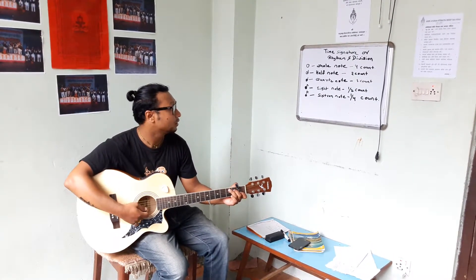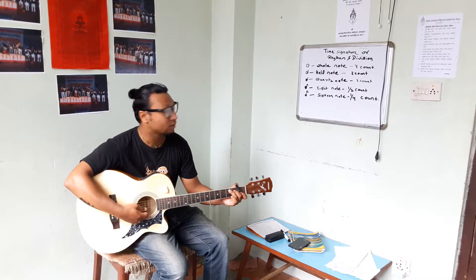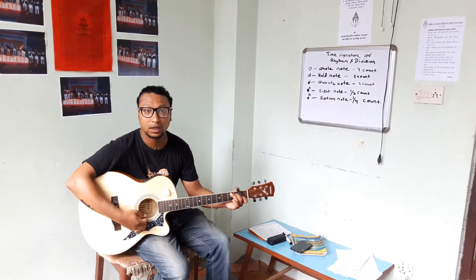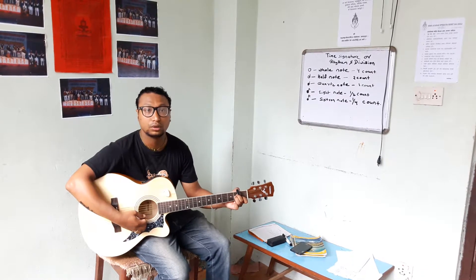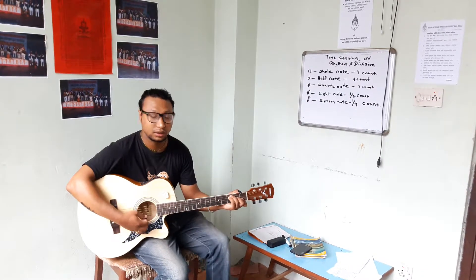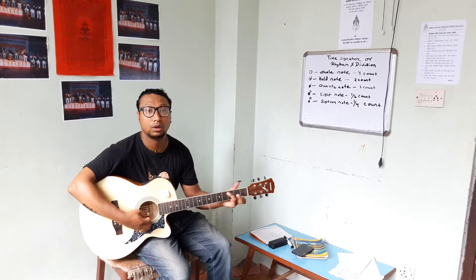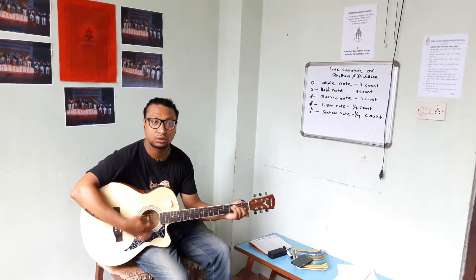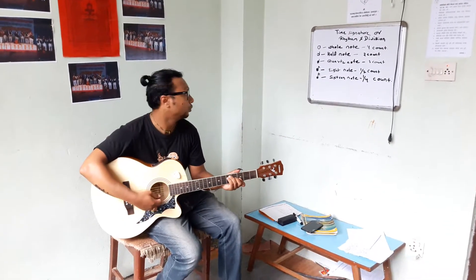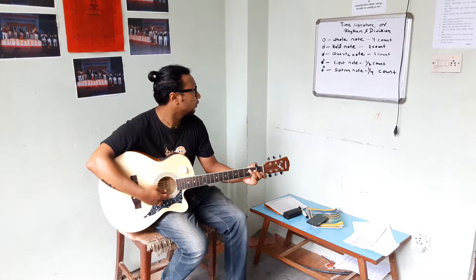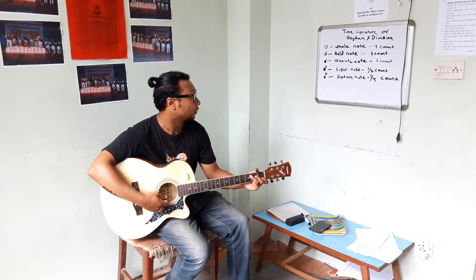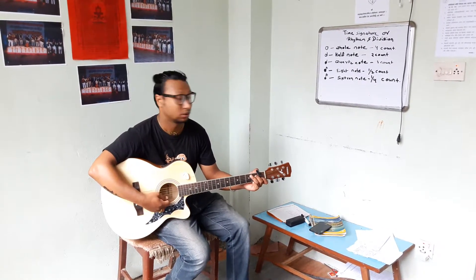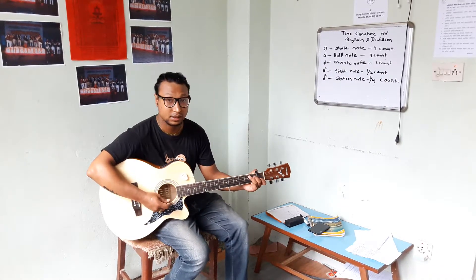The third one is the quarter note. Quarter note means one count in one beat — it goes like this. The fourth one is the eighth note. Eighth note means two counts in one beat — it goes like this.